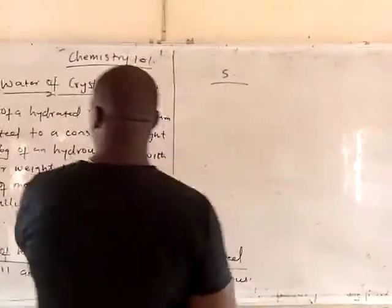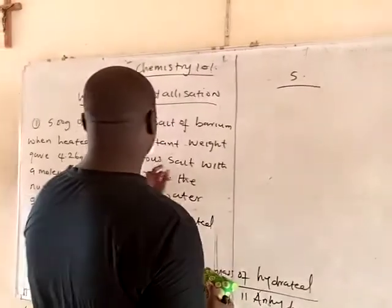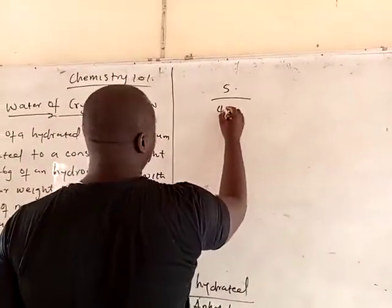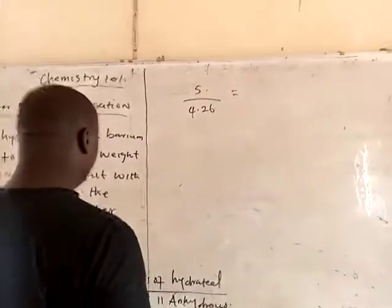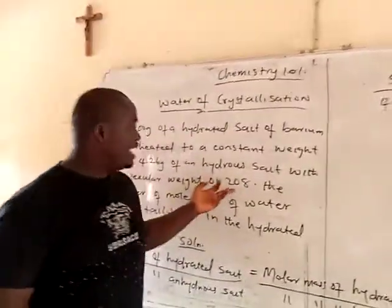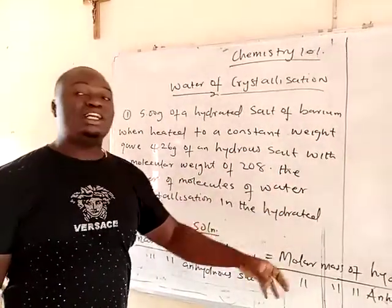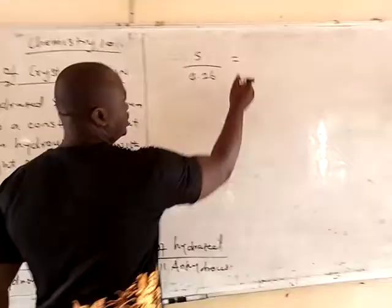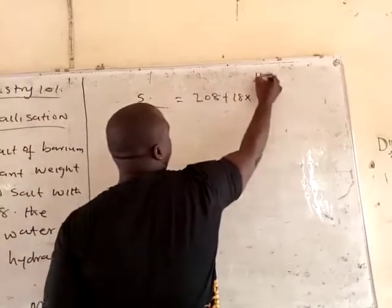So, five divided by the mass of the anhydrous, which is 4.26, is equal to the molar mass of the hydrated. The molar mass of the hydrated is 208, but remember the hydrated contains water of crystallization in it. So this would be 208 plus 18x.